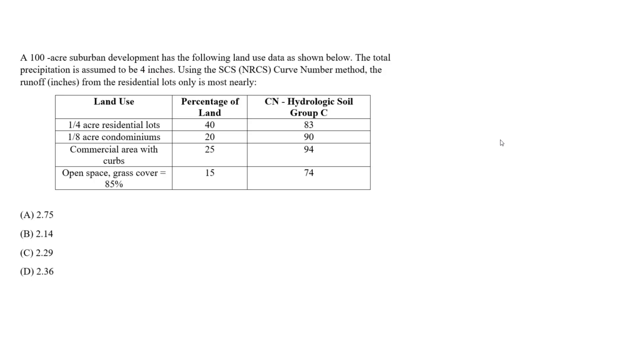We're given the total rainfall of 4 inches, and using the NRCS curve number method, the runoff in inches from the residential lots only is most nearly what? Residential lots only. So we're looking at these only, meaning we're only going to consider these. They want us only to determine the runoff in inches for the residential lots only.